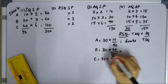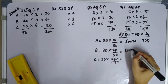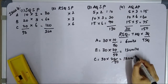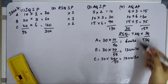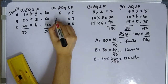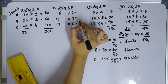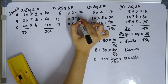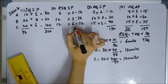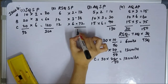So the revised standard quantities are: A = 6 units, B = 12 units, C = 12 units. Total RSQ is 30. RSQSP (revised standard quantity × standard price) gives: A = 12, B = 36, C = 72. Total RSQSP = 120.